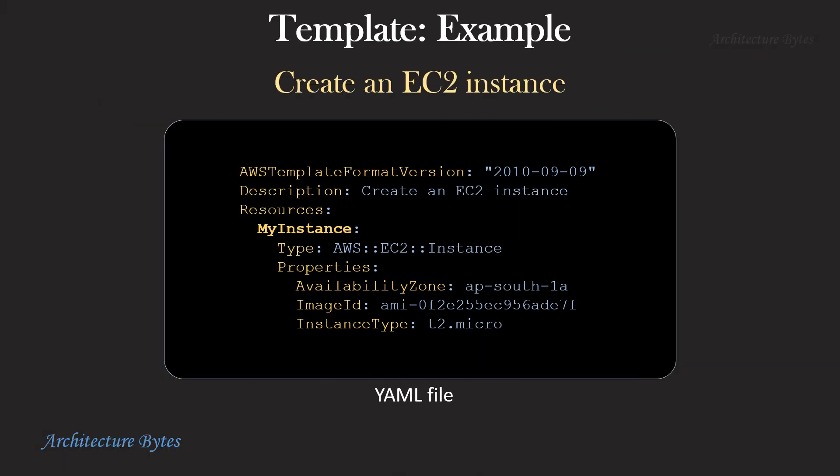Here is another example where we are creating an EC2 instance. Under resources, we have a resource called my instance and type is AWS EC2 instance. Properties for this resource are availability zone, image ID, and instance type. Some of these properties, depending on the resource type, may be compulsory. For example, if you do not provide image ID, stack creation will fail with this template.